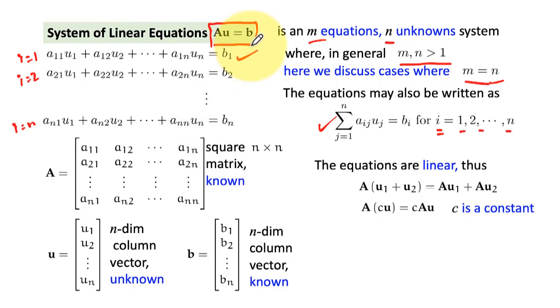When I write this system as Au = b, my A matrix is a square matrix in this case. It is given by a_11, a_12 up to a_1n as its first row. The second row is a_21, a_22 up to a_2n, and the nth row in this way is a_n1, a_n2 up to a_nn. So we have a square n by n matrix. Our unknown is u, which is an n-dimensional column vector given by u_1, u_2 up to u_n. On the other hand, in the right-hand side we have the known column vector b. Once again, this is an n-dimensional column vector given by b_1, b_2 all the way up to b_n.